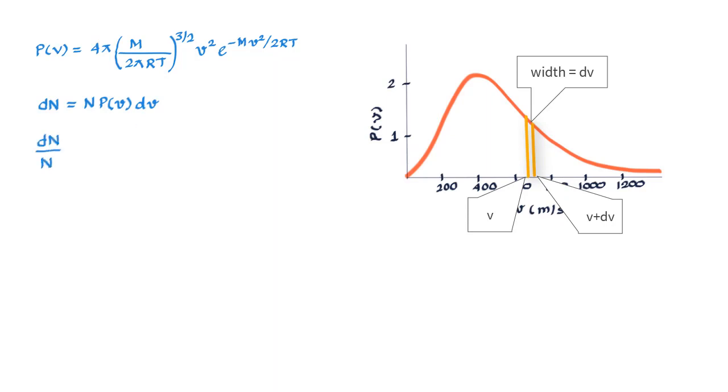As dn upon n is equal to P(v) into dv, and let's call this equation 1. Then dn upon n is nothing but the fraction of molecules that will have speeds in the interval v to v plus dv and will be equal to P(v) into dv.